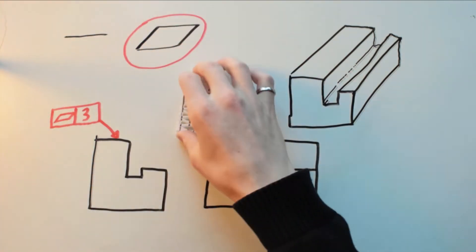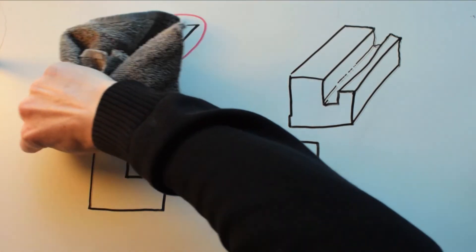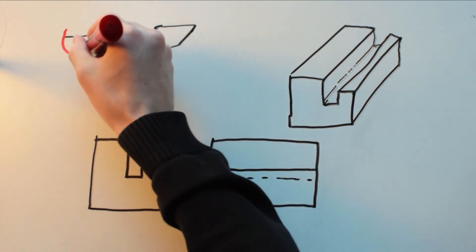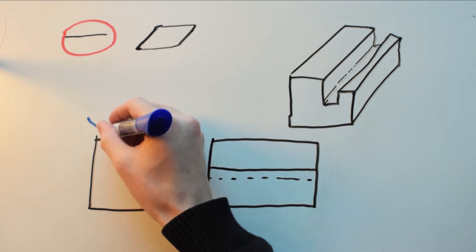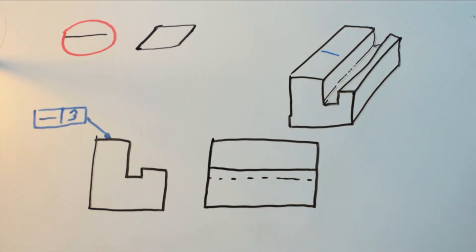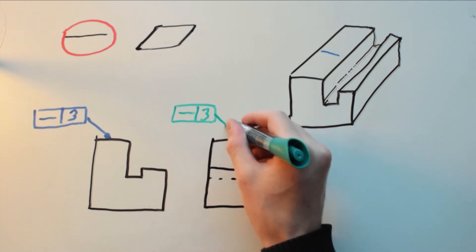Straightness is like a 1D version of flatness and is defined as the condition where an element of a surface or derived median line falls within a tolerance zone. Straightness is slightly different from flatness, and this is because unlike flatness which can be called out on any view and mean the same thing, straightness will actually change depending on which view it's called out on.